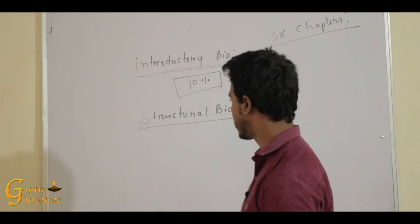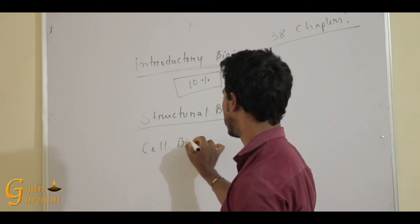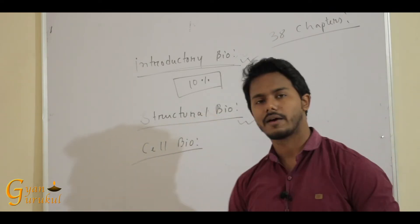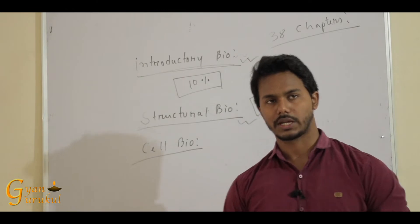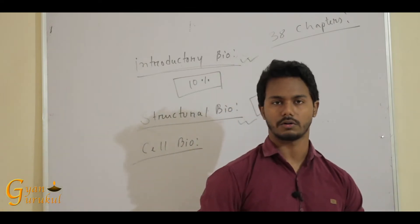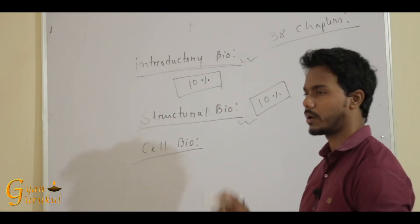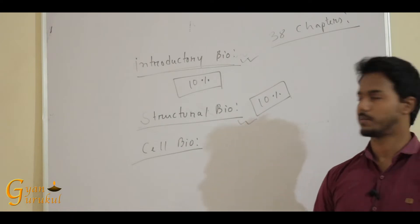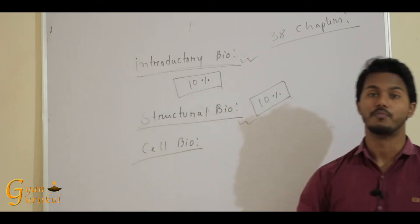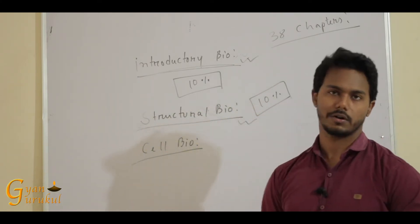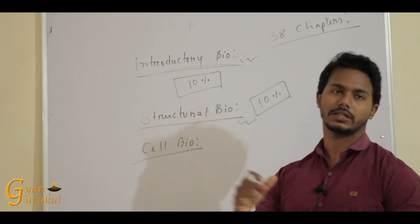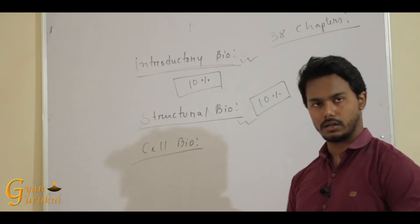Next we enter cell biology, which is one of the most crucial portions of NEET. Every year, more than six questions come from cell biology. Cell biology has three chapters. First is Biomolecules — it is chemistry-related, covering organic chemistry topics like proteins, lipids, and carbohydrates. Second is The Cell, the structural unit of life, which gives a brief introduction to prokaryotic and eukaryotic cells and their structures. The third chapter is Cell Division and the Cell Cycle.